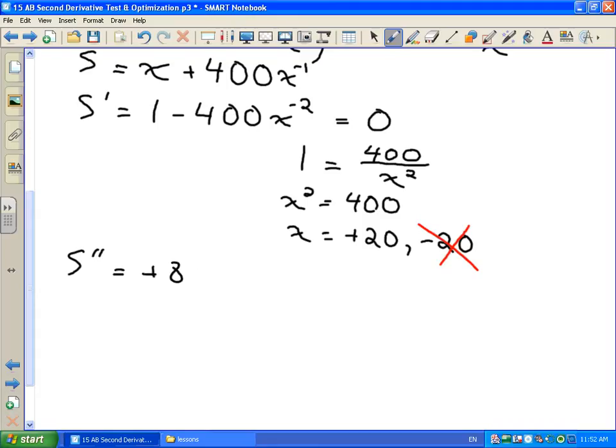So our second derivative is going to be positive 800, bringing down the negative 2, x to the negative 3. And we want to evaluate that at our critical number of 20. So that's going to give us 800 divided by 20 cubed, just bringing that x to the negative 3 down into the denominator and making the exponent positive. Now, I don't really care what the answer is here. All I care about is whether it's positive or negative.